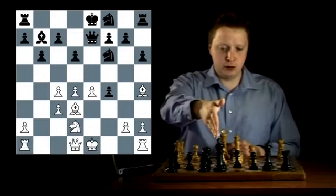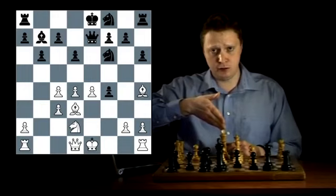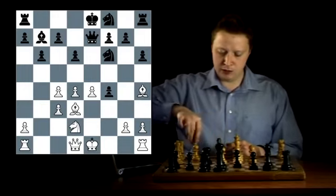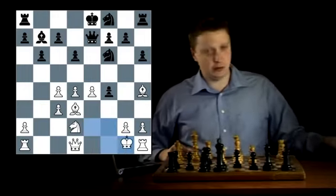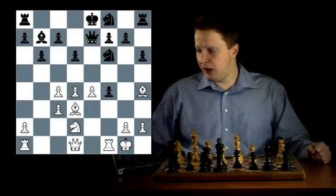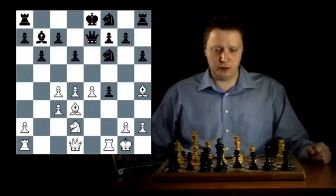No pawn break works in the center because this queen is lined up against your king. So for example, if white now continues with castling kingside, black can just play the simple knight to g6 here.